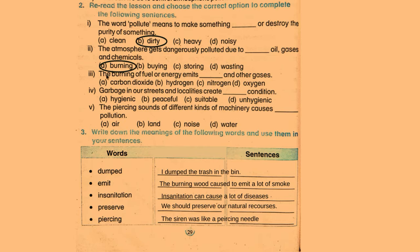The burning of fuel or energy emits dash and other gases. The options are: carbon dioxide, hydrogen, nitrogen, and oxygen. The correct answer is carbon dioxide. Garbage in our streets and localities creates dash conditions.